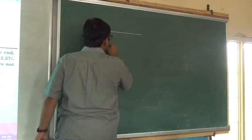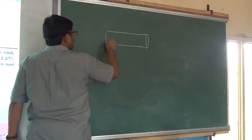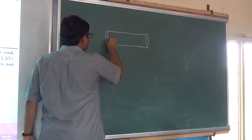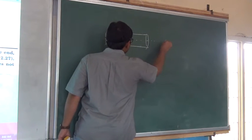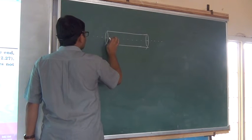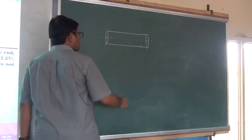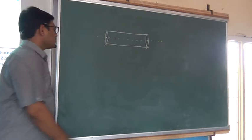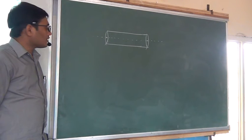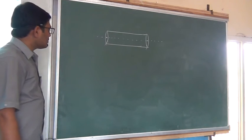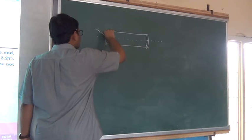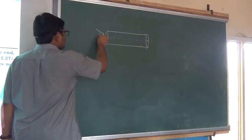This is a transparent cylindrical fiber, and this is the axis of this. This is the angle of incidence — how much? Theta. He is giving the condition from theta only, right?